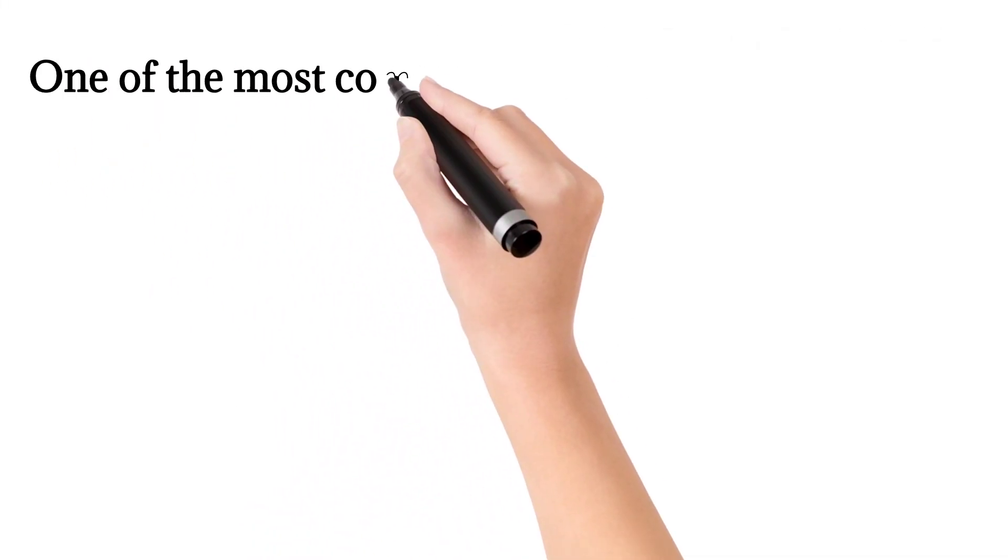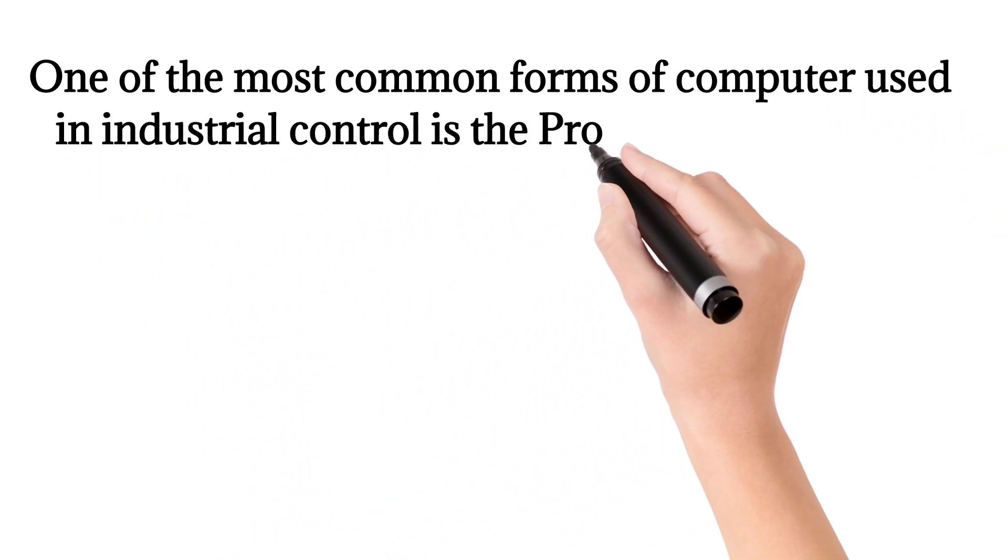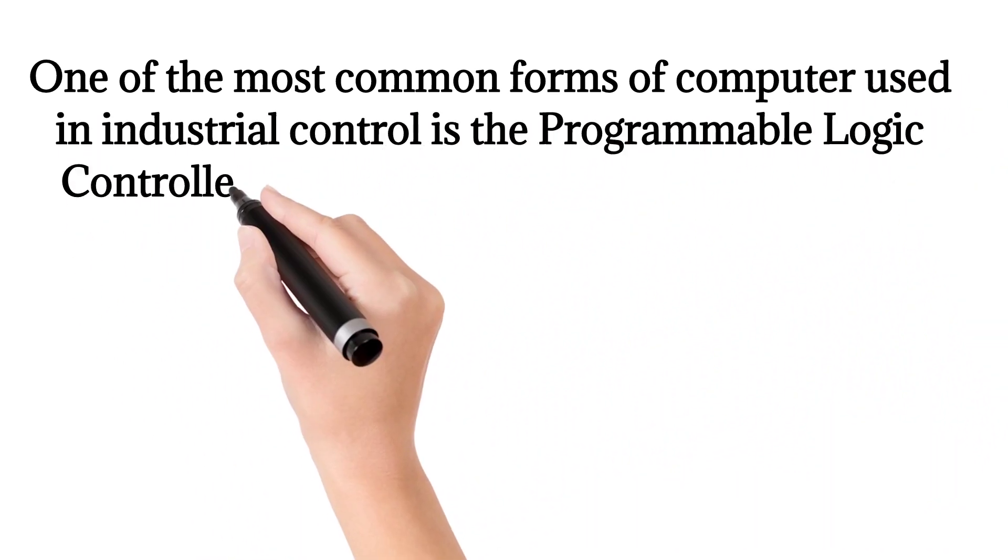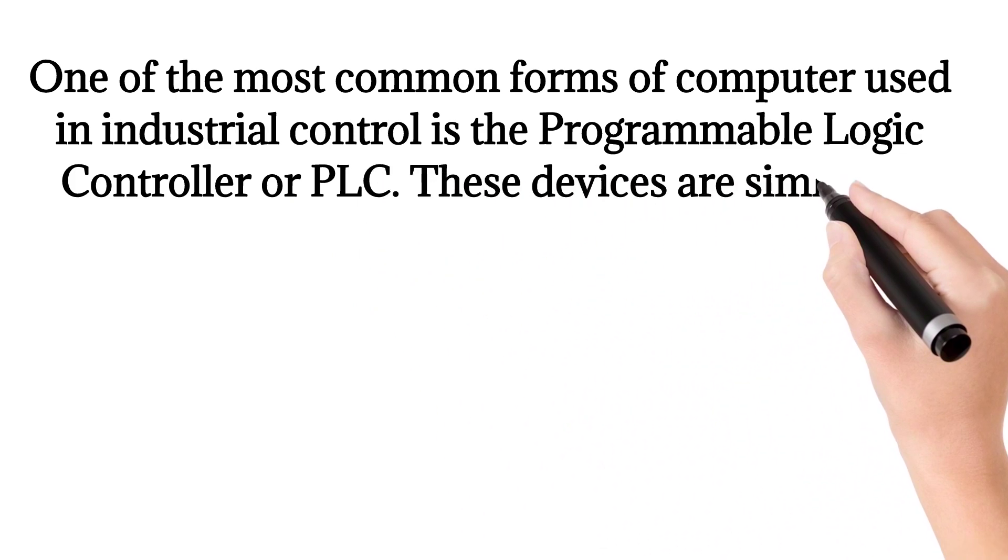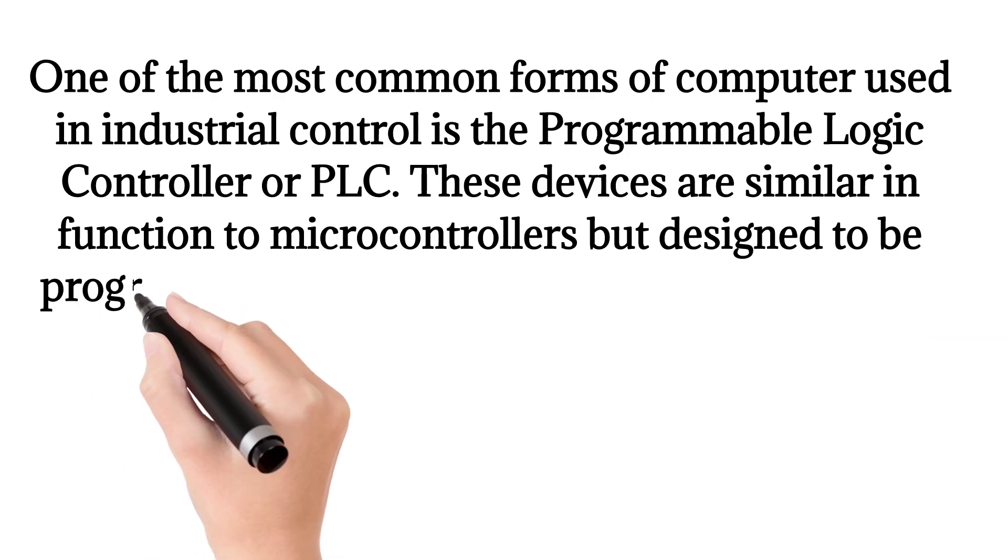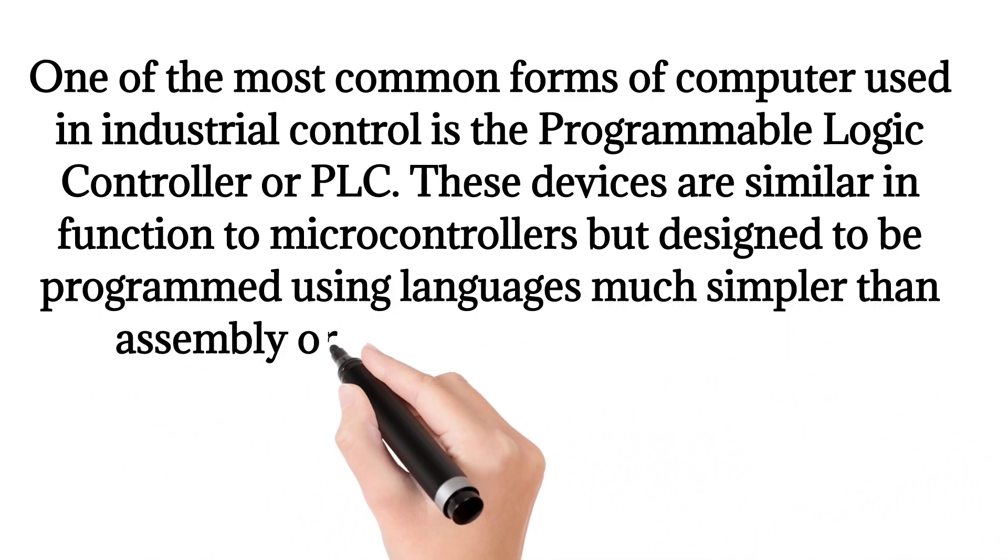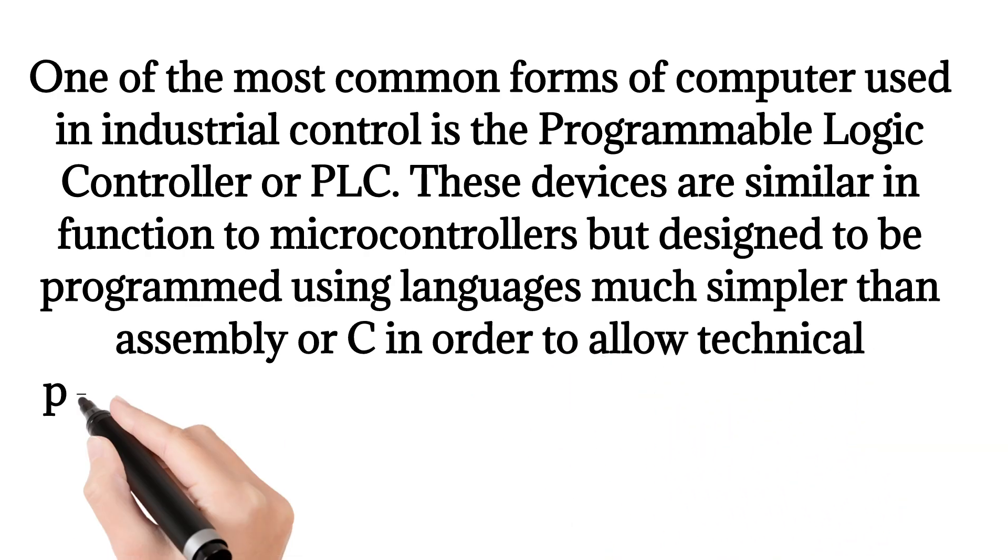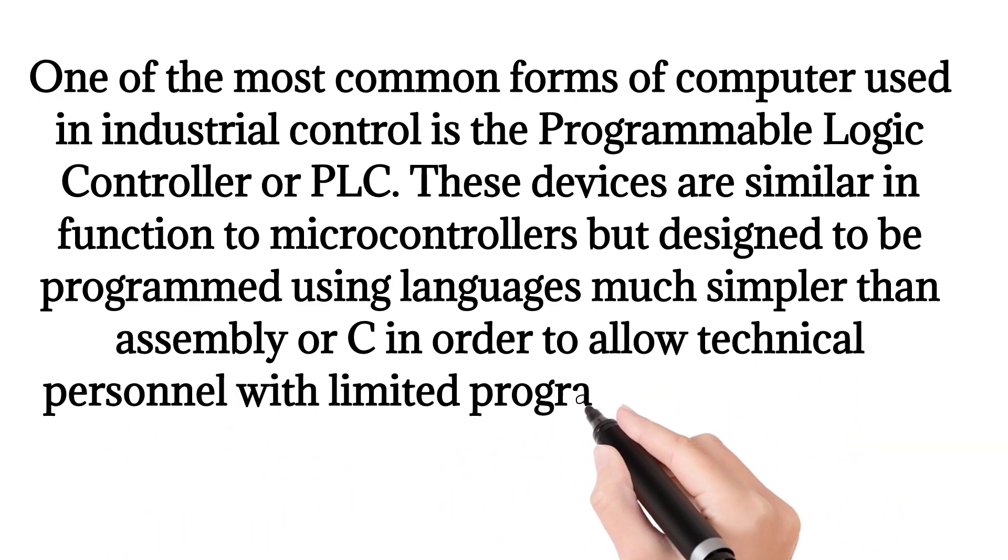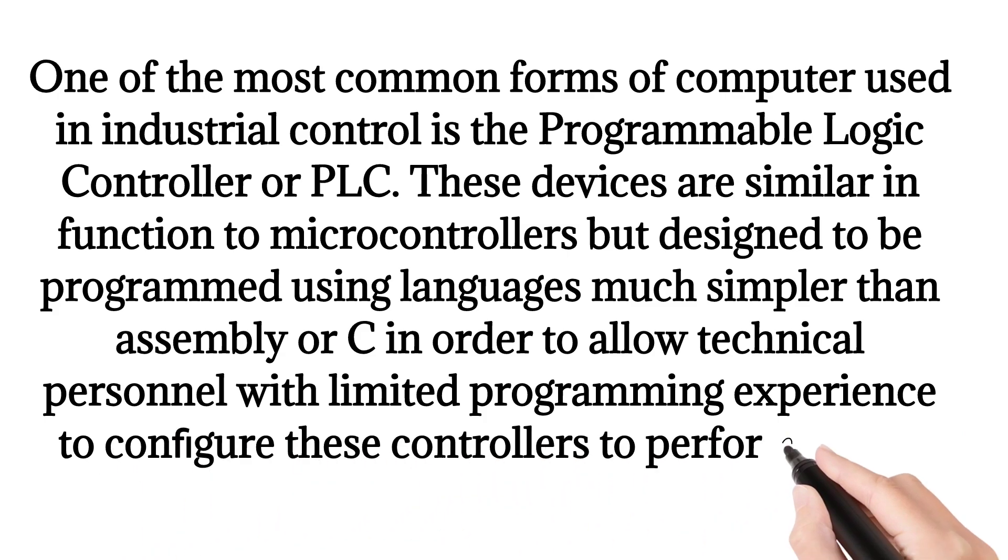One of the most common forms of computer used in industrial control is the Programmable Logic Controller or PLC. These devices are similar in function to microcontrollers but designed to be programmed using languages much simpler than Assembly or C in order to allow technical personnel with limited programming experience to configure these controllers to perform useful automation tasks.